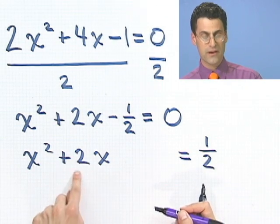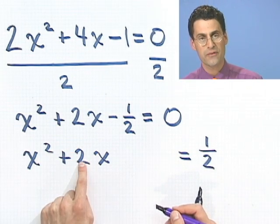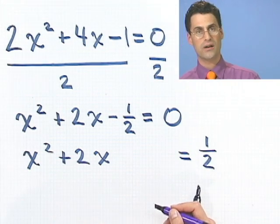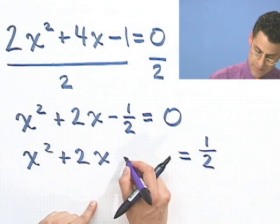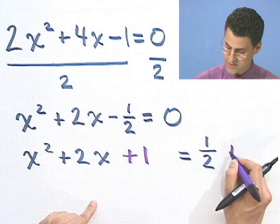I take this thing in front of the x, take half of it, which would be 1, and square 1. Squaring 1 is just 1. So I'd add that to both sides. Plus 1, plus 1.